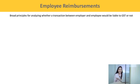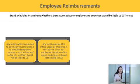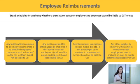The moot question is whether the provision of a certain facility is a supply of goods and services, or a provision of a benefit to employees arising out of an employment contractual obligation. The broad principles for analyzing whether a transaction between an employer and employee is liable to GST are: First, any facility common to all employees with no identified employee or customer — such as free tea or coffee in the office — should not be liable to GST. Second, any facility provided for official usage in the normal course of employment, such as office laptop or parking, should also not be liable to GST. Third, any reimbursements to employees such as mobile bills are not a supply per se by the employer and hence should not be liable to GST. Any other supplies by the employer not in the normal course of employment are to be analyzed on a case-to-case basis.